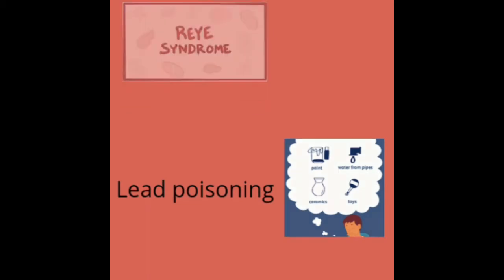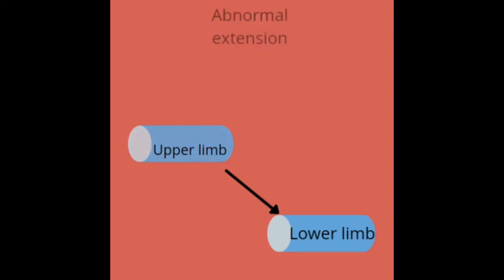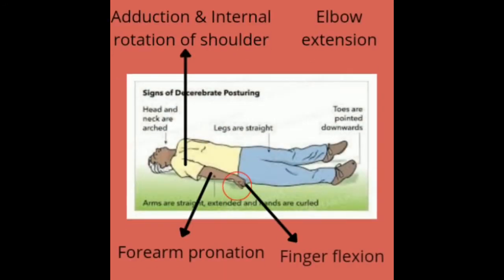Decerebrate posturing is an abnormal extension response — upper limb, lower limb extensions are all present. At the upper limb level, the shoulder is adducted and internally rotated. The elbow is extended. The forearm is pronated. The fingers are flexed.